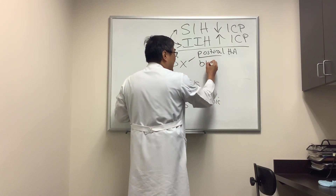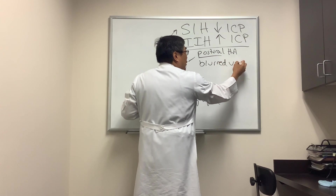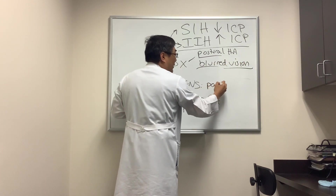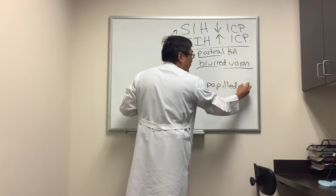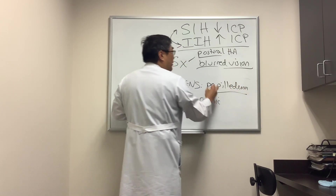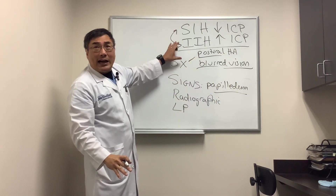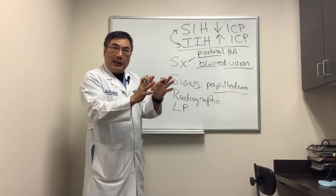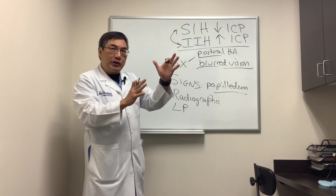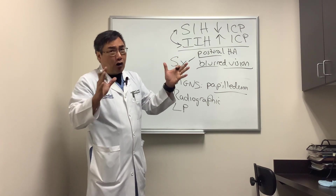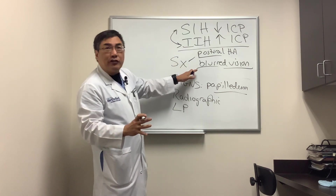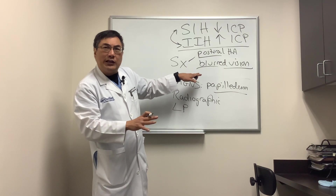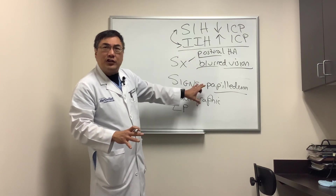Both conditions can also cause blurred vision. In increased intracranial pressure, that's associated with the sign of papilledema. You have to do a visual field in both SIH and IIH because what we're looking for is a visual field defect. The pressure-related phenomenon — both high and low intracranial pressure, and ironically glaucoma — spares the central acuity. So you cannot use central acuity alone; you have to do a field.